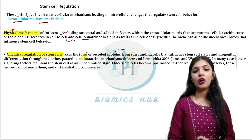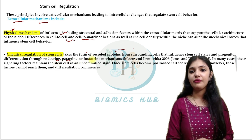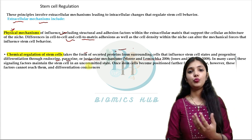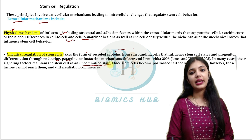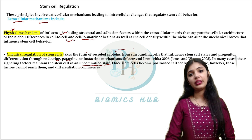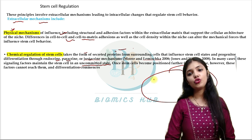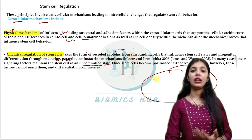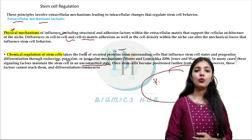Next is chemical regulation of stem cells. There are certain types of chemicals — endocrine, paracrine, and juxtacrine factors — which influence the cell to remain in stem cell form. These were helping to keep a stem cell in an uncommitted state. The niche was responsible for this, and it was secreting certain chemicals like endocrine, paracrine, and juxtacrine factors, also providing a micro-environment for them.